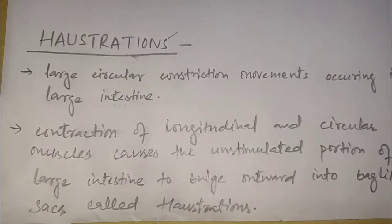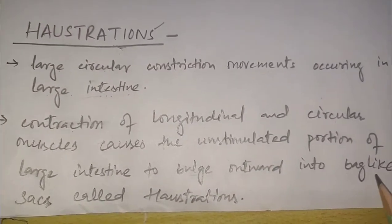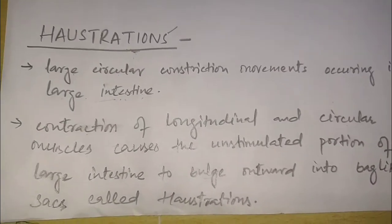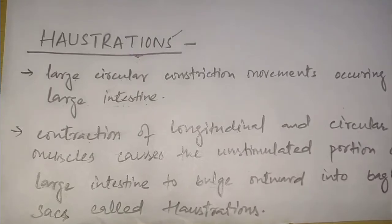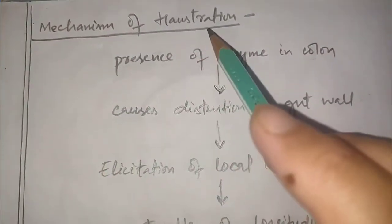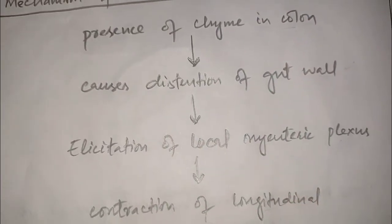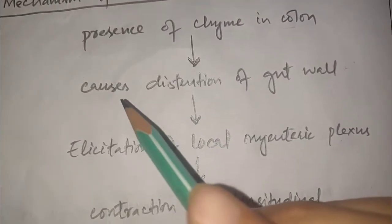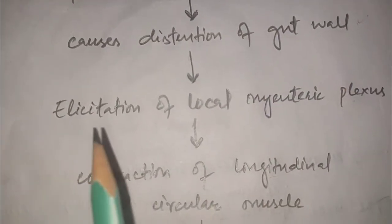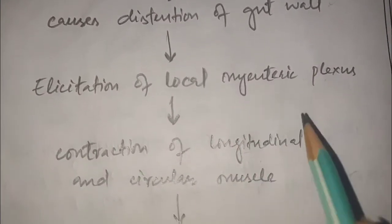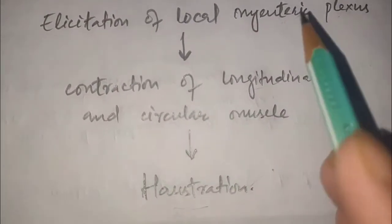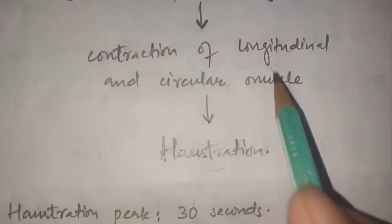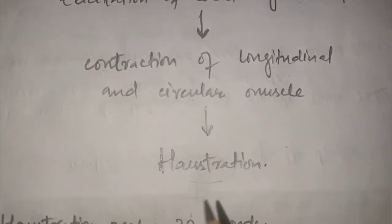In haustrations, there is contraction of both longitudinal muscle and circular muscle, which causes the unstimulated portion of large intestine to bulge outward, forming a bag-like structure called a haustration. The mechanism begins with the presence of chyme in the colon, causing distension of the gut wall. This distension elicits the local myenteric plexus, which causes contraction of both longitudinal and circular muscle, resulting in haustration.